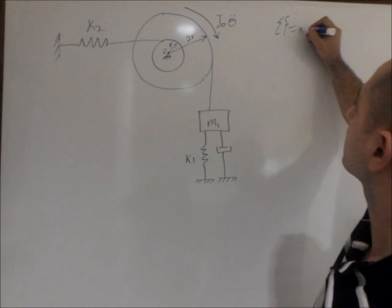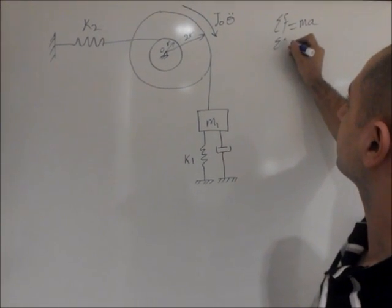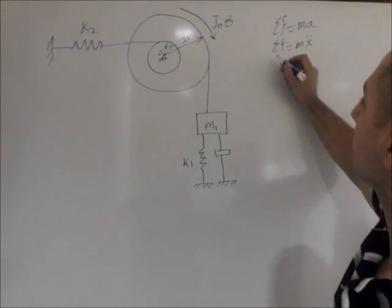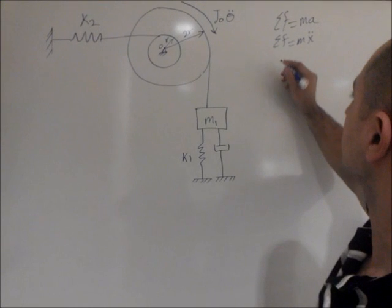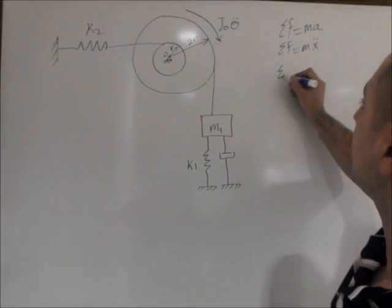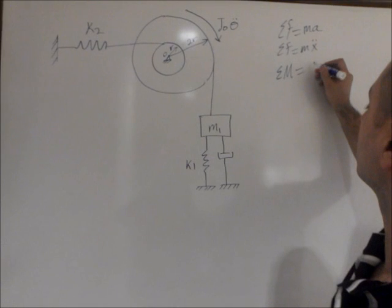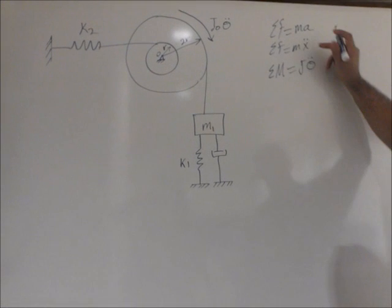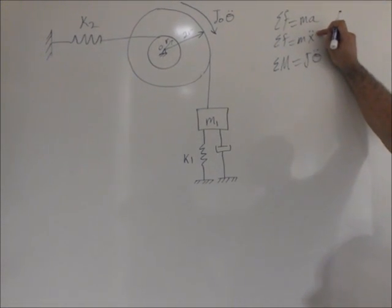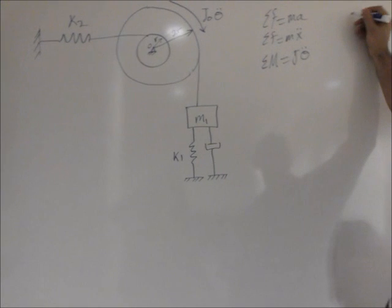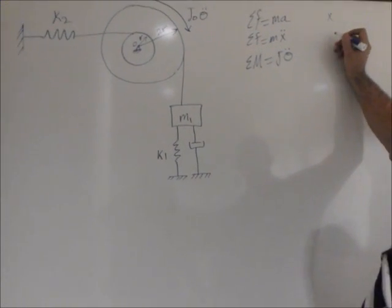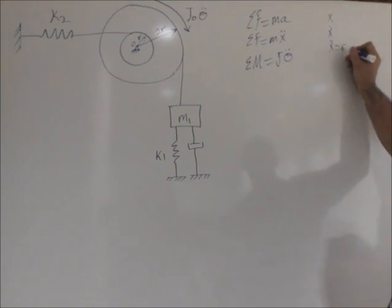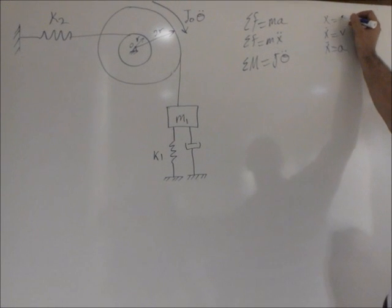Summation of forces equals ma, or in this case we can actually write it in a way mass times acceleration, or in the other form we can actually do summation of the moment equals the moment of inertia times X double dot. I'm sure everybody knows that X double dot is actually the acceleration, the distance is considered as X, velocity is considered as X dot, and double dot is actually considered as the acceleration.